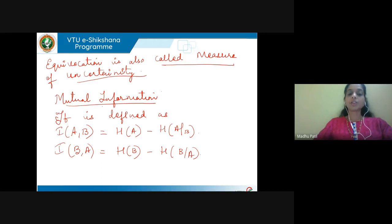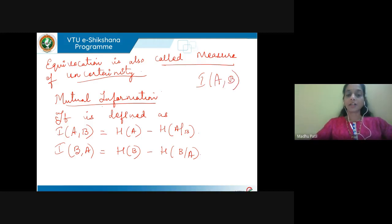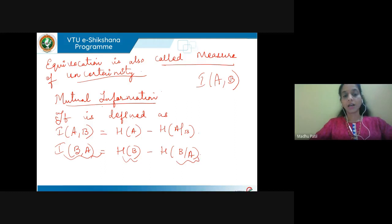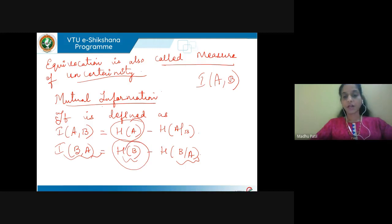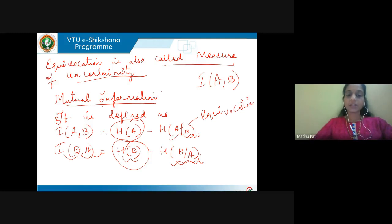Next is mutual information, denoted I(A;B), where A is the input and B is the output. It is defined as H(A) − H(A|B), or equivalently I(B,A) = H(B) − H(B|A). H(A) is the entropy of input symbols before transmission, and H(A|B) is the equivocation — a measure of uncertainty.